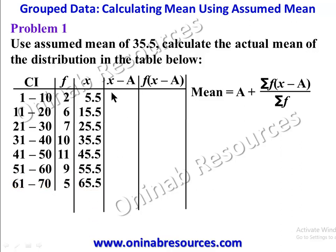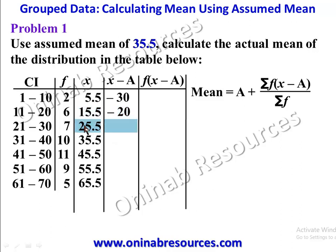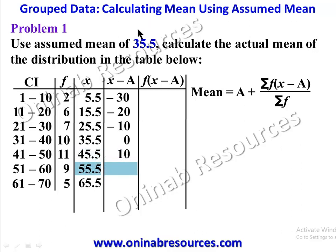Now we fill in the x minus a column, where a is 35.5. So: 5.5 minus 35.5 gives negative 30; 15.5 minus 35.5 gives negative 20; 25.5 minus 35.5 gives negative 10; 35.5 minus 35.5 gives 0; 45.5 minus 35.5 gives 10; 55.5 minus 35.5 gives 20; and 65.5 minus 35.5 gives 30.